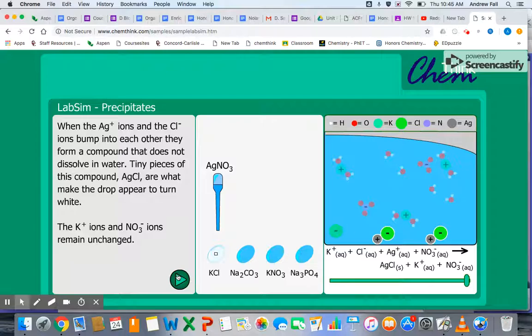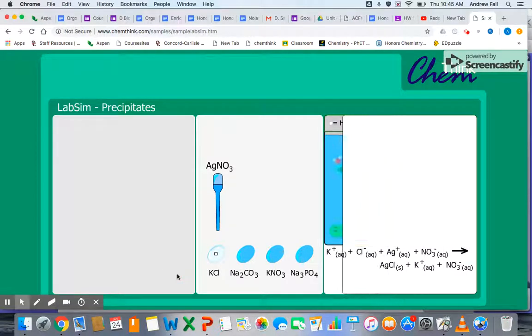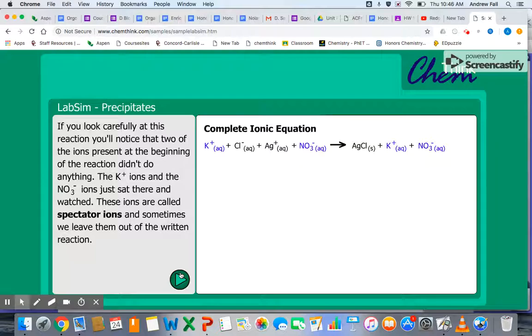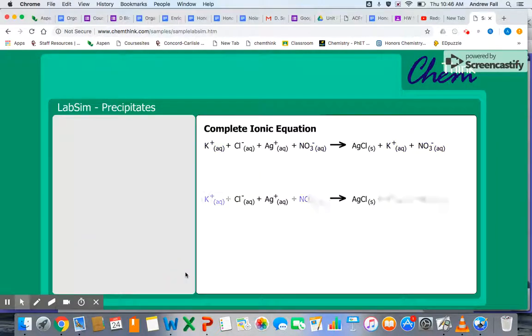So when we're describing this equation, right here we have the complete ionic equation. It shows all the ions that were present in the solution, and it shows the product that forms as a solid. When we use the net ionic equation, we're really just looking at the species that were actually participants in the reaction.